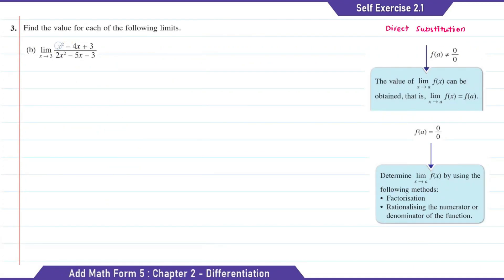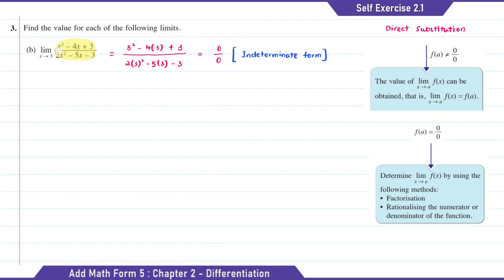Question B: we're going to substitute x with 3 as x is approaching 3. The answer of this is 0 over 0. To find the limit value for B, we need to factorize this. So for the numerator, after we factorize it, we're going to get (x minus 1)(x minus 3).